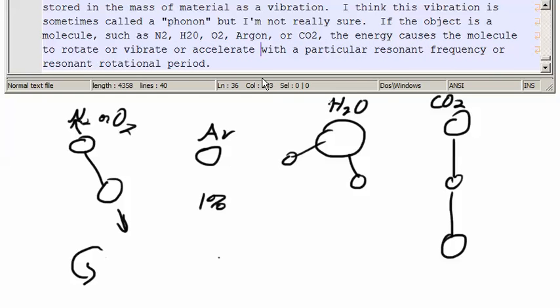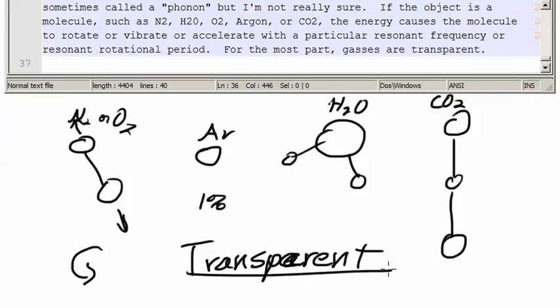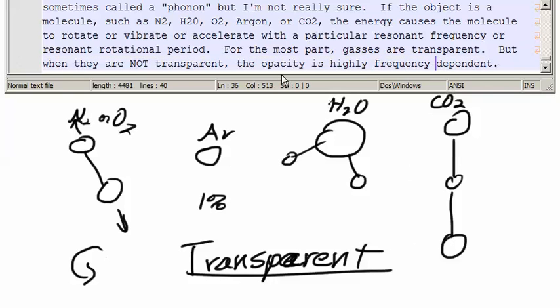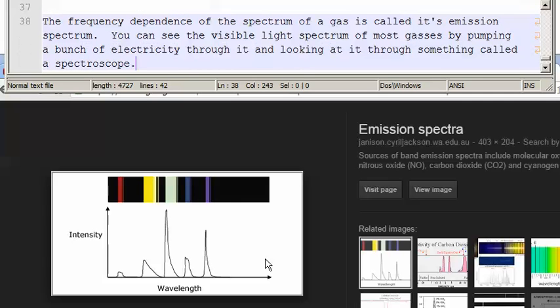with a particular resonant frequency or resonant rotational period. For the most part, gases are transparent, means light can go right through them. But when they are not transparent, the opacity is highly frequency dependent.